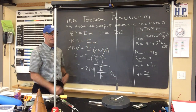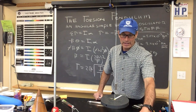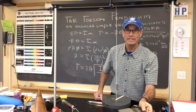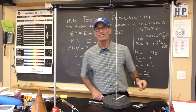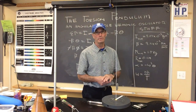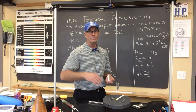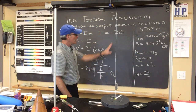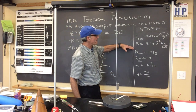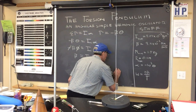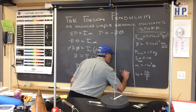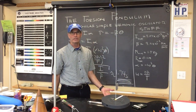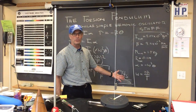Using my HP calculator — constructed in 1986, this is 2020 or later if you're watching after publication — if you plug in I and beta, you get approximately 1.94 seconds. So that's the theoretical period — the predicted period of oscillation.